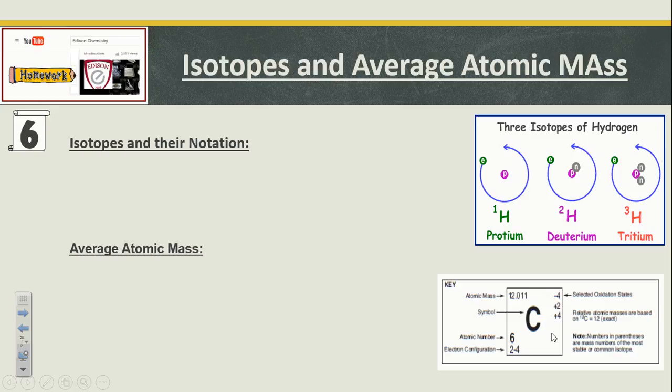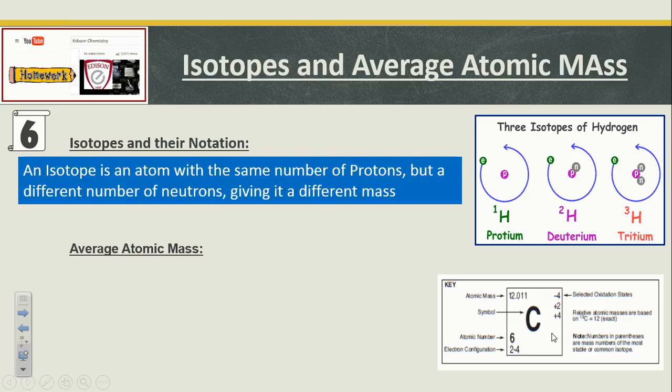First things first, isotopes and average atomic mass. Isotopes are atoms with the same number of protons but a different number of neutrons, giving it a different mass. You can see this picture here of the three isotopes of hydrogen. We have protium, deuterium, and tritium. They all have the same single one proton and one electron, but the neutrons are different, leading to different atomic masses.